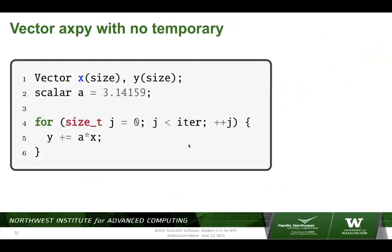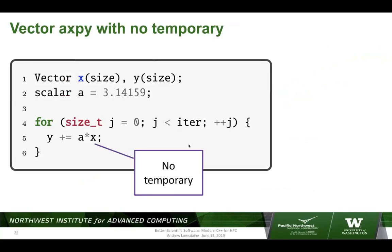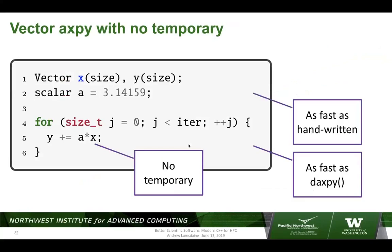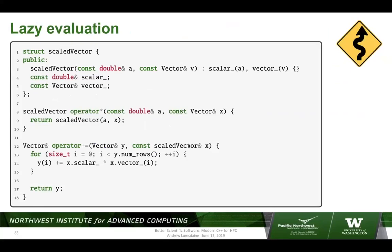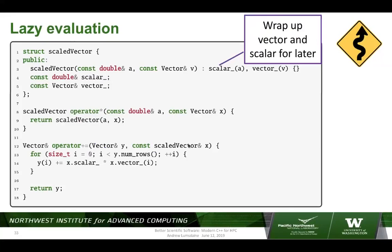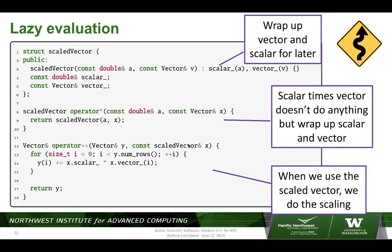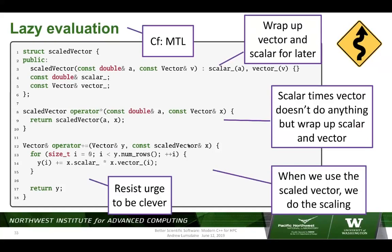The way we did the axpy without the temporary — and this starts to border on being clever, so I'm putting up a warning sign — is that when we had the expression a times x, we created a temporary type that didn't actually create a temporary vector. Then when we did the assignment into y with plus-equals, we actually did the scaling. This starts to border on being clever, but because axpy is such an important idiom, doing it in just some limited cases could be okay.